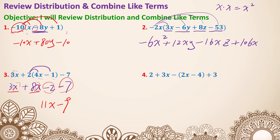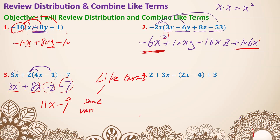Let's quickly look back at examples 1 and 2. In example 1, we have x and y — they're not like terms because they're different variables. In example 2, you may see negative 6x squared and 106x both have x, but one is x squared and the other is x to the first power. So the requirements for like terms: they have to have the same variable and the same exponents.